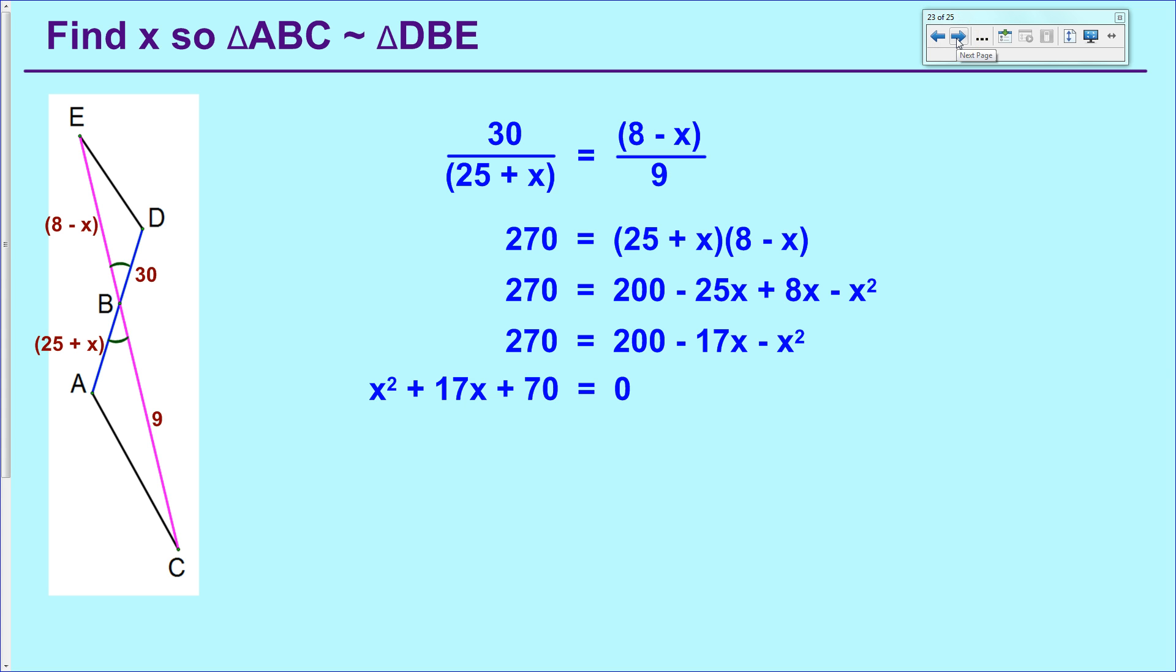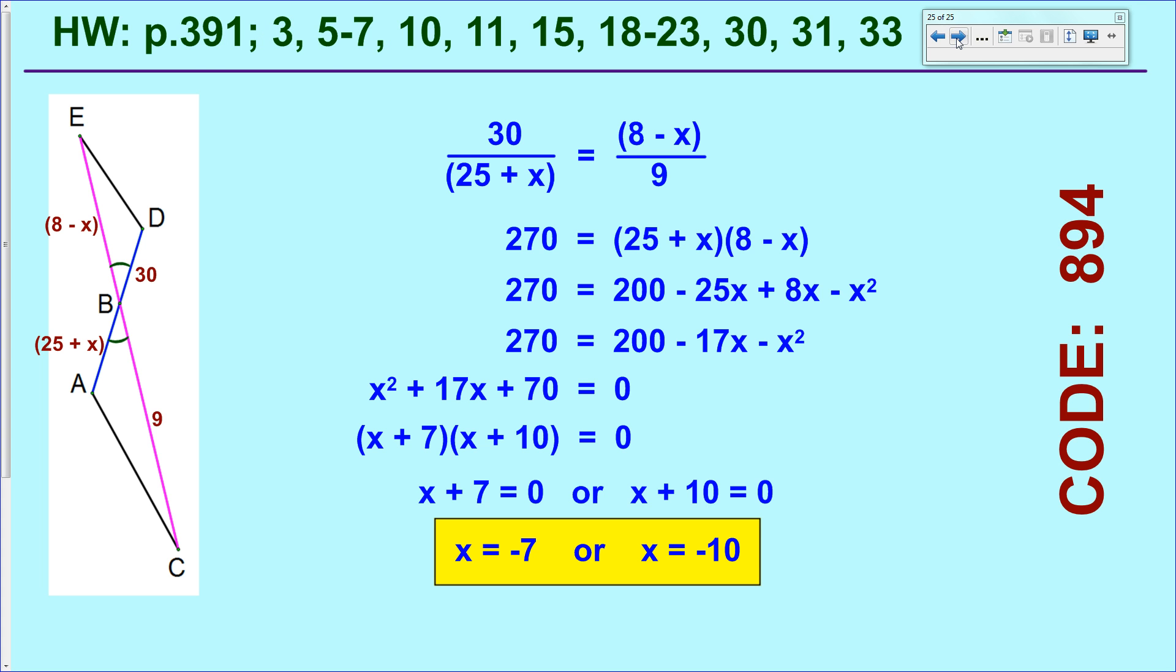From there, you should be able to handle factoring that into a set of binomials or a pair of binomials. x plus 7 and x plus 10 work in this case. And then you can apply the zero product principle or property or whatever it is and saying that you have two things multiplied together equal to zero. So one or both of those things must be equal to zero itself. So set up two little baby equations and solve each of them. And you'll get x equals negative 7 and x equals negative 10.